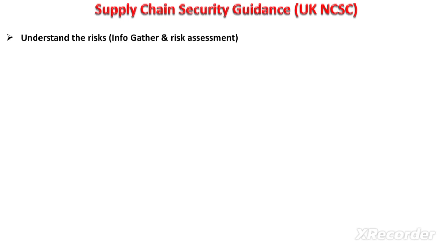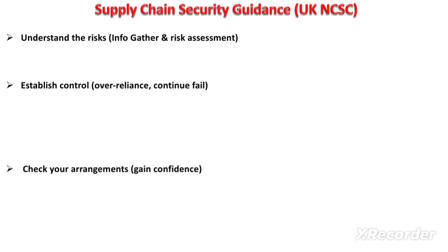The first category is understanding the risk — gathering information and performing risk assessments related to your supply chain security. The second is establishing supply chain security controls, for example if you are over-relying on a particular vendor or that vendor is continually failing to meet your security expectations. The third is checking the security controls and security arrangements of your supply chain to gain confidence. The fourth is to continually improve the supply chain security in order to evolve your security with these threats.